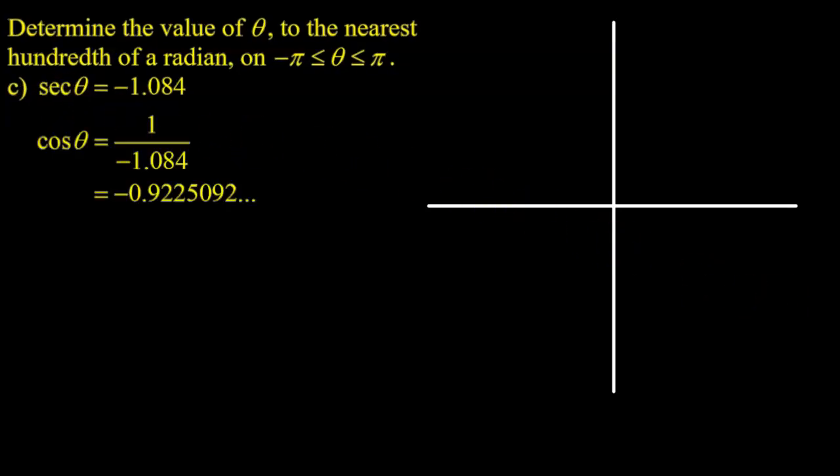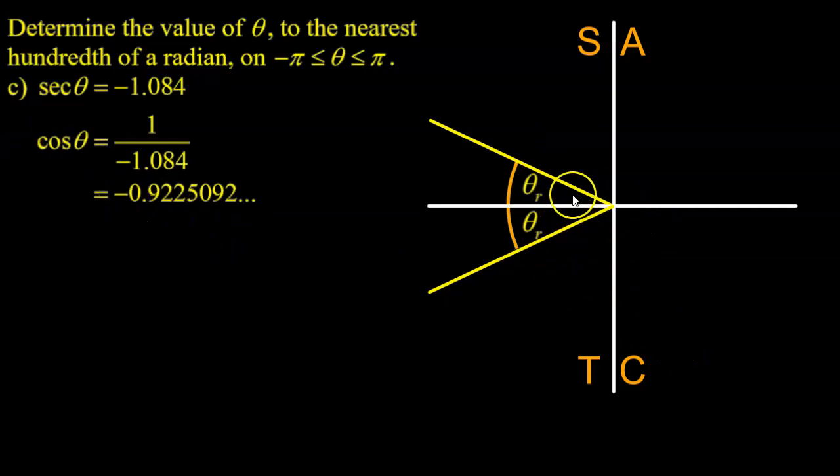Since I don't have a secant button, what I'm going to do first is flip or reciprocate both sides of the equation to come up with an equivalent equation that I can solve. So the reciprocal of secant theta is cos theta, and the reciprocal of negative 1.084, simply put, is 1 divided by negative 1.084, and I get negative 0.922. So now what I'm going to do is solve this equation: where is cos theta equal to negative 0.922? So again, I will go to my CAST rule, and I recognize from CAST rule that it's in quadrants 2 and 3 where cosine is going to be negative.